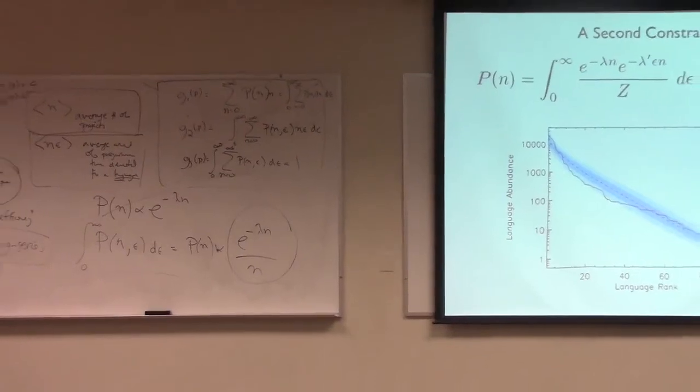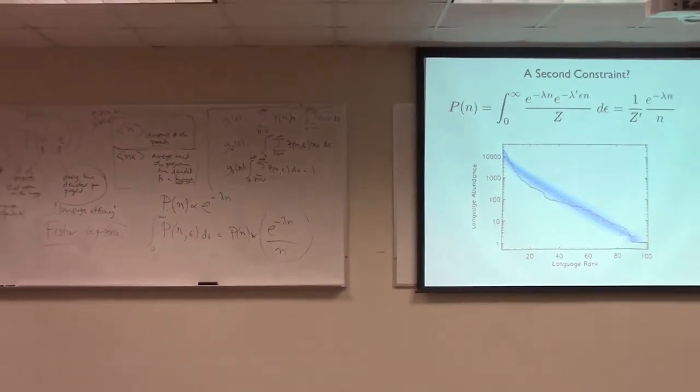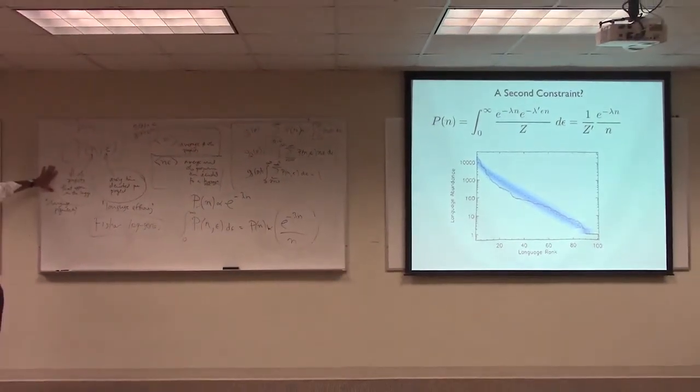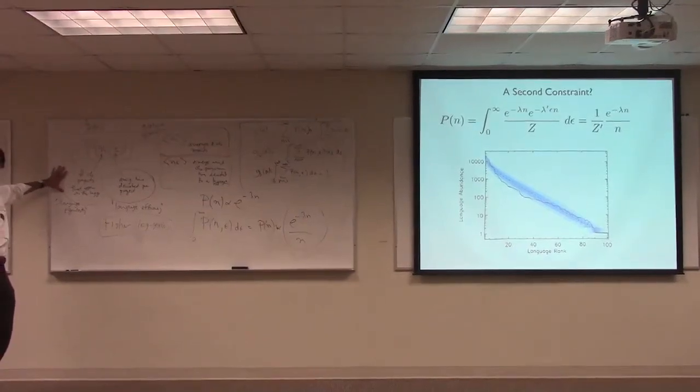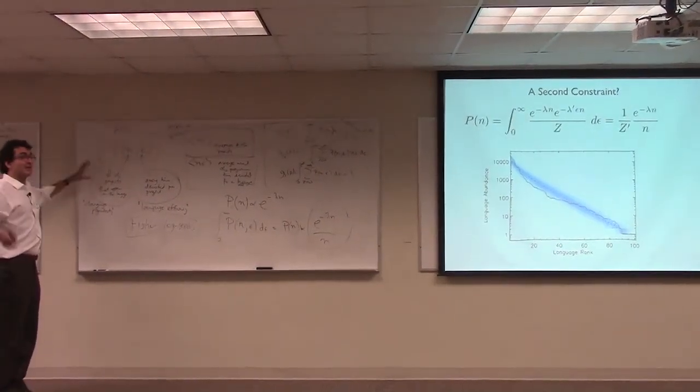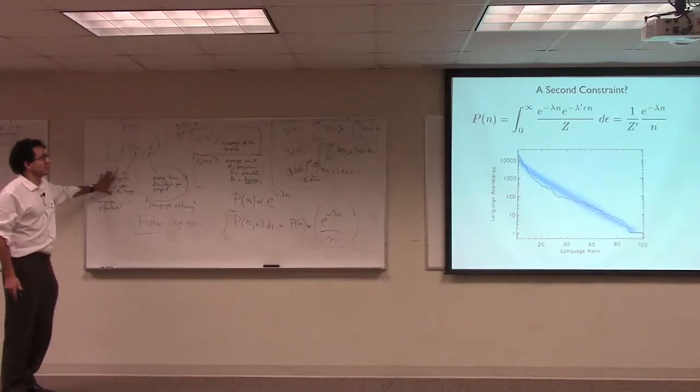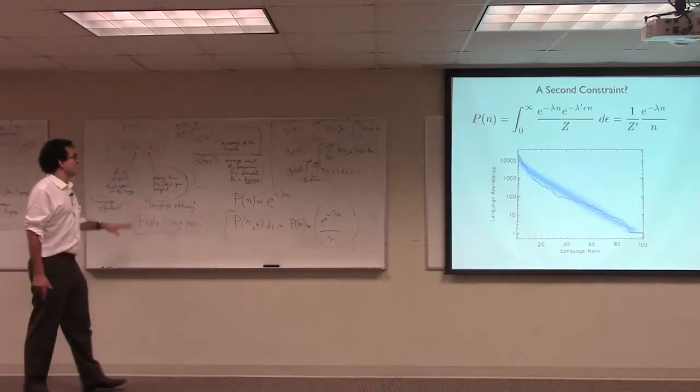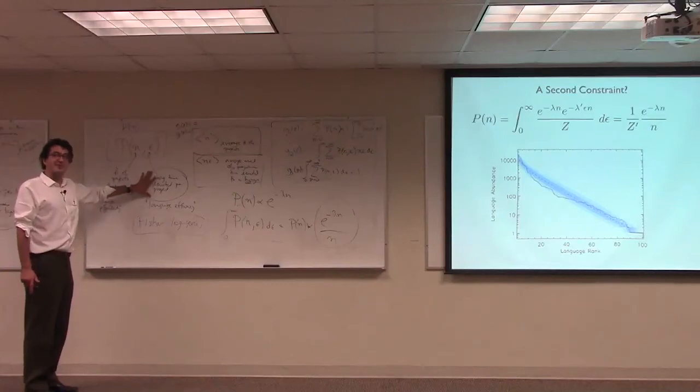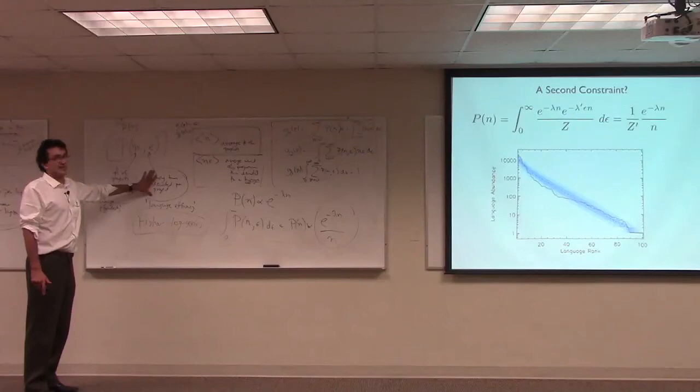It's suggesting that two things are constrained. Languages tend not to get too popular on average. There's some kind of limit to how popular language can get on average. That's the source of this constraint here. But there's also a limit to how much time or how much effort can be devoted to projects in a particular language. And that's this constraint here.